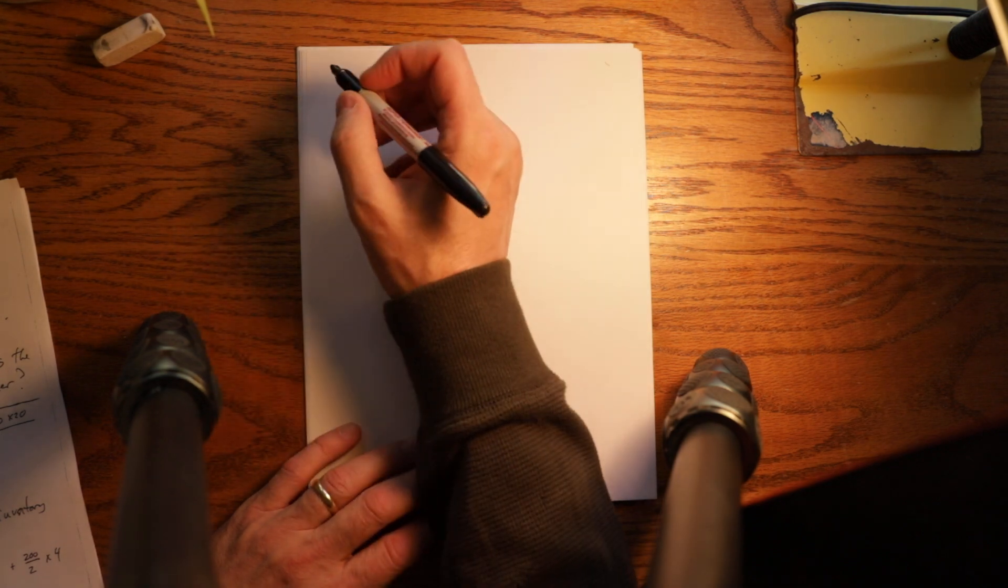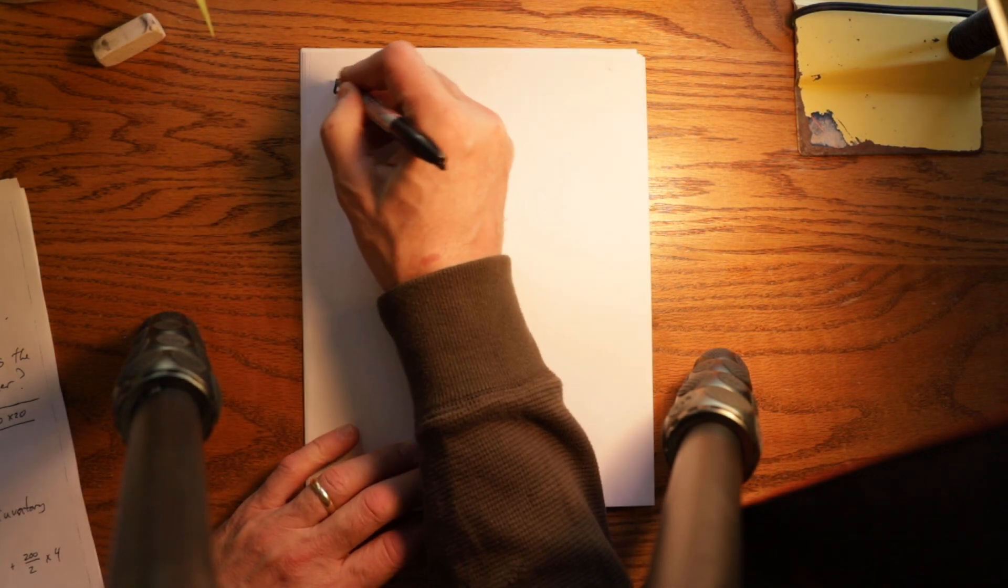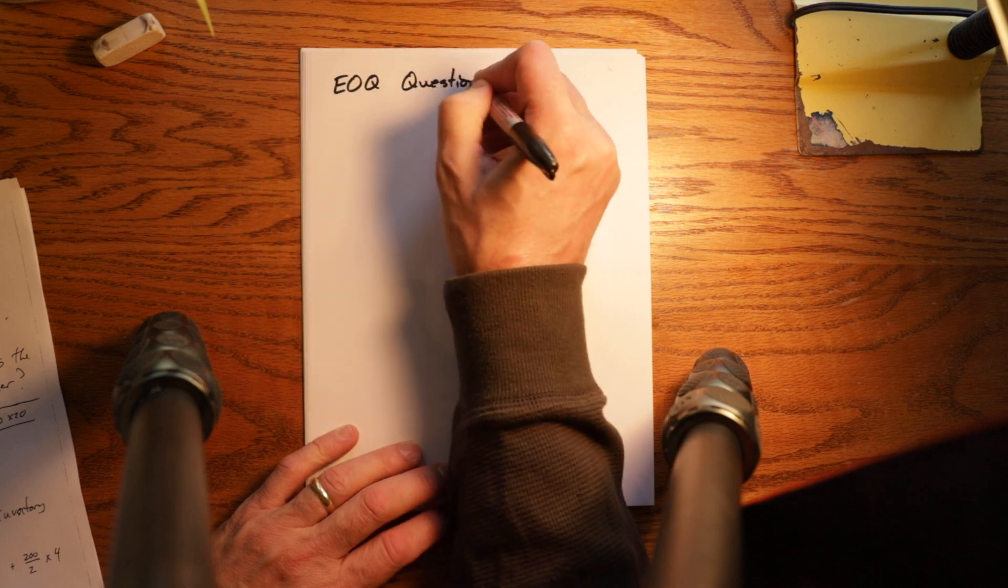So this is the second of the 3310 exam review questions and what I'm going to do this time is an EOQ question. So this is another inventory question.